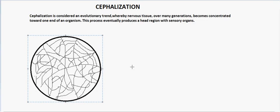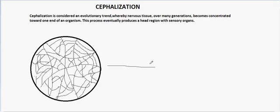Let's take a radially symmetric organism — I've drawn it as a circle. The lines represent neurons connected end to end, forming a nerve net type of structure, as found in primitive organisms like hydra. In this arrangement the nervous tissue is not concentrated towards any end, so the organism is not cephalized and it is radially symmetric.